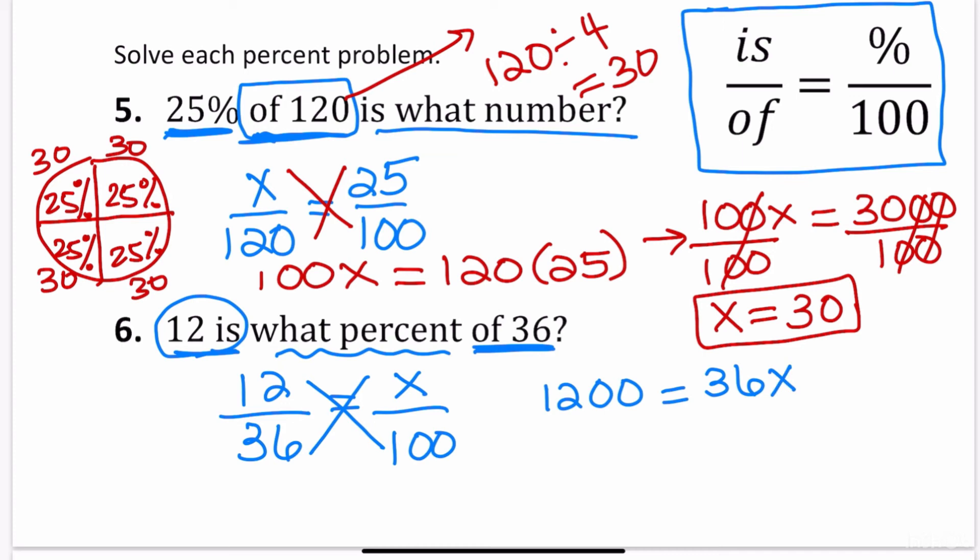You always divide by the number that's next to the variable. So in this case, we have to divide both sides by 36. So if I divide by 36, that means if you use your calculator, x is approximately 33.3 and the 33.3 is repeated. Okay, so that's what that bar on top of the three means that it's 33.3333 and it just continues forever.